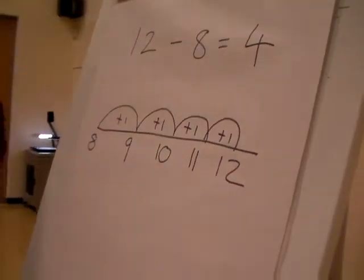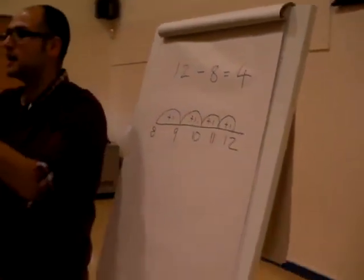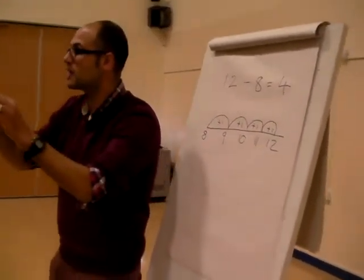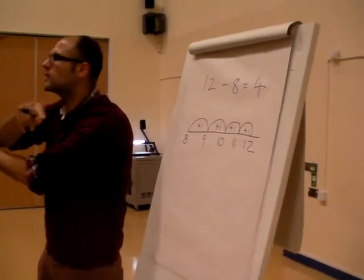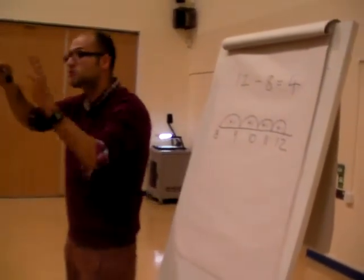What they're doing is they're finding the difference between the smallest number and the biggest number. And we're adding on. So they don't have to do it backwards. They just add upwards, from the smallest to the biggest.